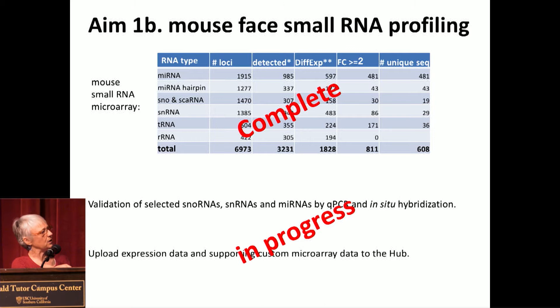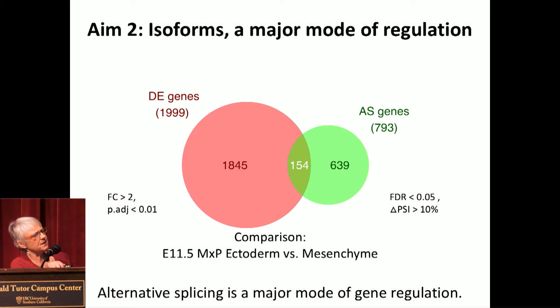Moving on to our second aim, which was the isoform analysis. One point I want to make in addition to what Hiram was talking about is that the genes regulated by differential expression and the genes regulated by isoform differences are really fairly distinct sets of genes. This is an example from E11.5 maxillary process mesenchyme versus ectoderm, and so it's really important to look at these isoform differences in addition to levels of gene expression.